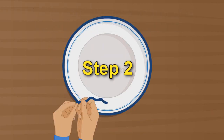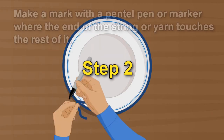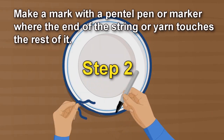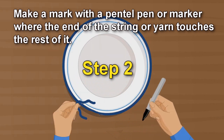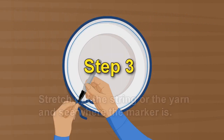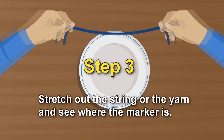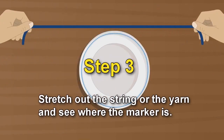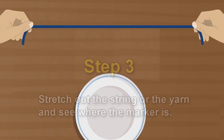Step 2: Make a mark with a pencil, pen, or marker where the end of the string or yarn touches the rest of it. Step 3: Stretch out the string or the yarn and see where the marker is.